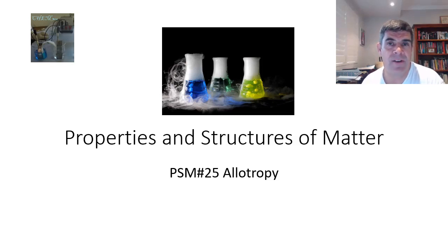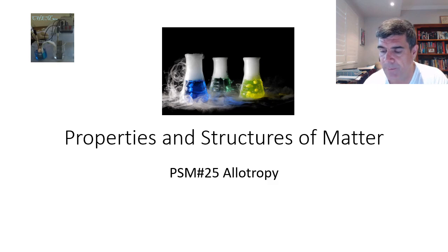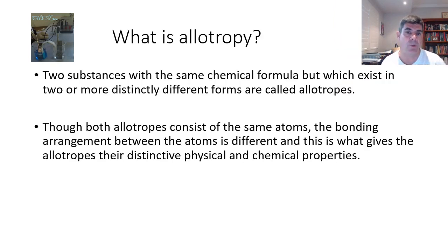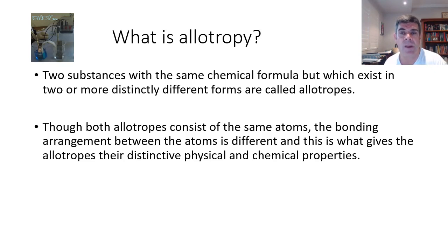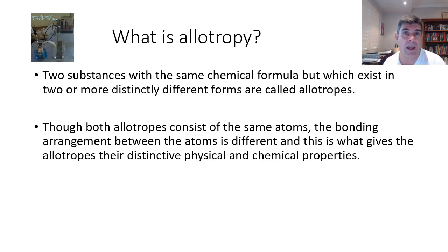Hi students, welcome to Year 11 Chemistry and the properties and structures of matter, video number 25. In this one we're going to quickly touch on allotropy. In this last section we're looking at bonding and the structures that are formed as a result of different types of bonds, both physical and chemical. Allotropy is one of the interesting things to look at as part of this discussion, because allotropy is a property that certain types of elements have — they can have multiple ways in which they are bonded together.